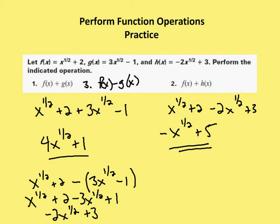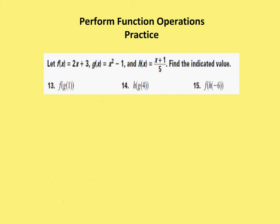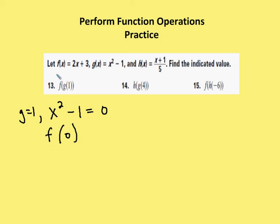Moving on to composition of functions problems. I have f of g of 1. I'm going to take g of x and substitute 1 for x. So if g of x is x squared minus 1, I substitute in 1 for x, and I get 1 squared is 1, minus 1 is equal to 0. So when g of 1, x squared minus 1 is equal to 0. Now I'm going to take f of 0. f of x is 2x plus 3. I substitute in 0 for x — 2 times 0 is 0, plus 3 is going to be my answer: 3.